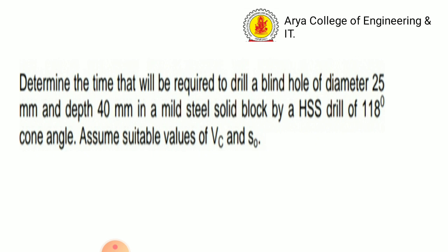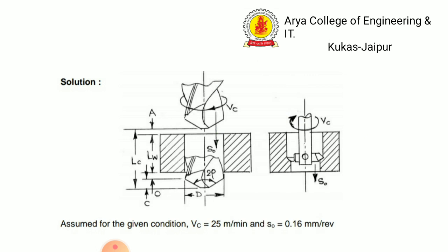Now we take another example of a drilling operation. Determine the time required to drill a blind hole of diameter 25 mm and depth 40 mm in a mild steel solid block by a high-speed steel drill with a point angle of 118°. Assume for the given conditions: Vc = 25 m/min and S0 = 0.16 mm per revolution.